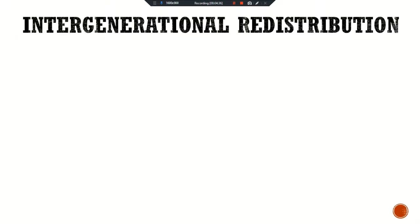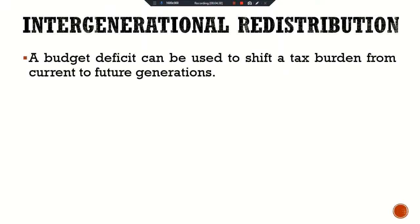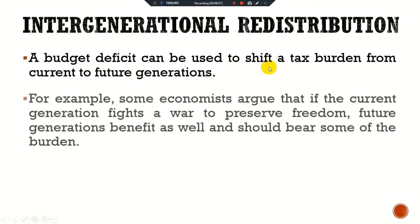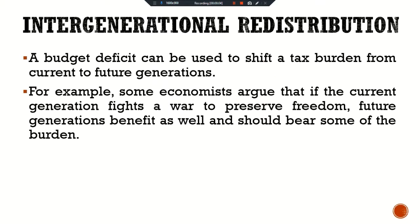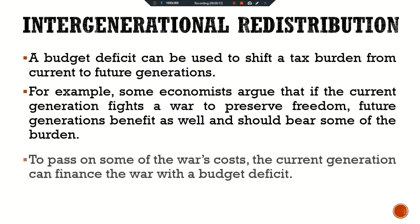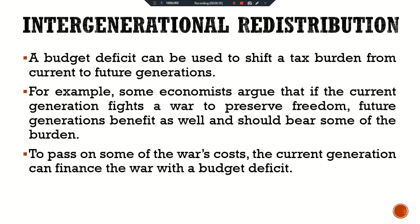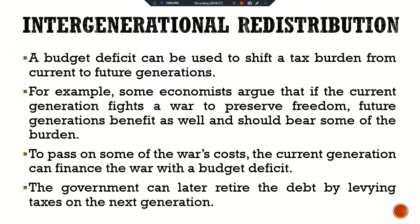The third reason is intergenerational redistribution. A budget deficit can be used to shift a tax burden from current to future generations. For example, some economists argue that if the current generation fights a war to preserve freedom, future generations benefit as well and should bear some of the burden. To pass on some of the war's costs, the current generation can finance the war with a budget deficit. The government can later retire the debt by levying taxes on the next generation. These considerations lead most economists to reject a strict balanced budget rule.